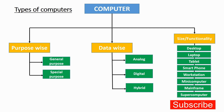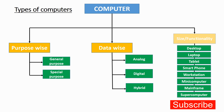Computers can be categorized in three ways: purpose-wise, data-wise, and size-wise. So we want to understand the purpose-wise, then the data-wise, and then the size and functionality of the computer. These are the subcategories.